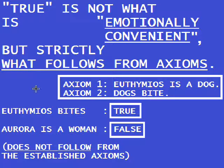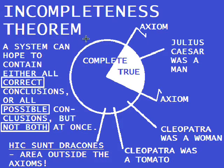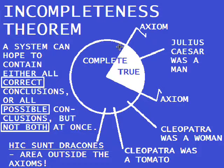True is only what follows from the axioms and nothing else. That directly leads us to a very interesting concept which is called the incompleteness theorem. You might be interested in the works of Gödel and Tarski about this topic. Its most basic idea is actually as simple as it is genius. You say a system can be either complete or correct — either the full circle or this wide section — but not both at the same time, if it follows from some certain axioms.